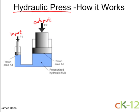On the input side, the surface area of the piston is labeled A1, and it's this one right here. And on the output side, we have another piston labeled A2, which is this one right here.